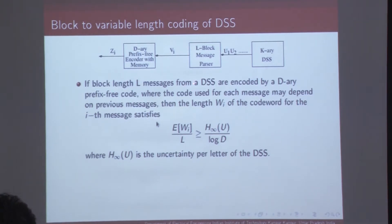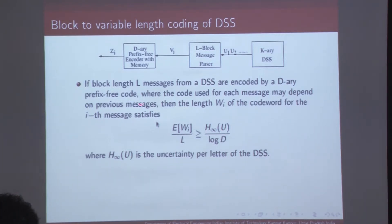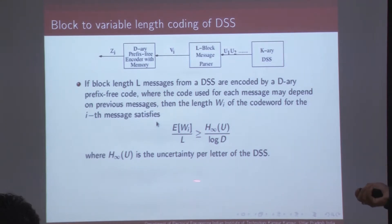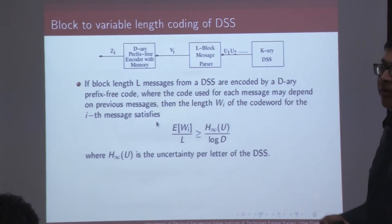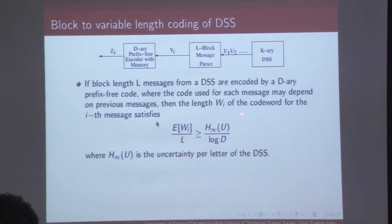If we have a block length L message from a discrete stationary source which is encoded by a prefix-free code where the code used for each message may depend on previous messages — that is the key difference because the source has memory — then the expected codeword length per letter is lower bounded by the entropy rate of the source. We have seen a similar result for a discrete memoryless channel where expected codeword length per letter is lower bounded by the entropy. Here it is lower bounded by the entropy rate of this discrete stationary source.